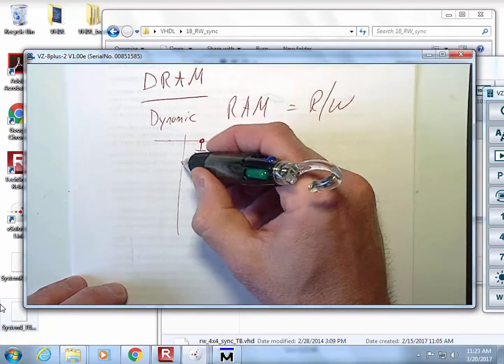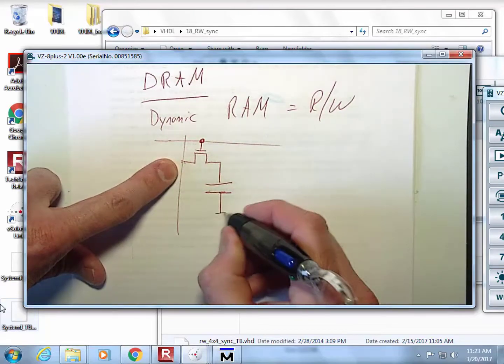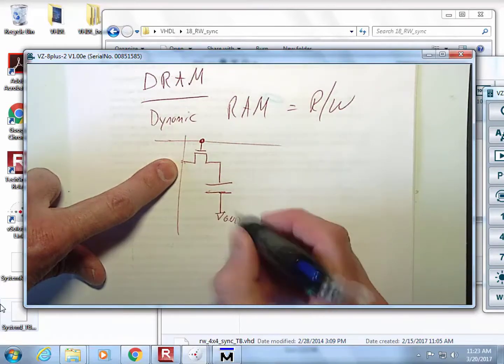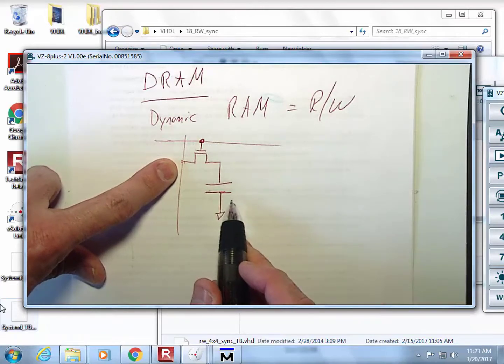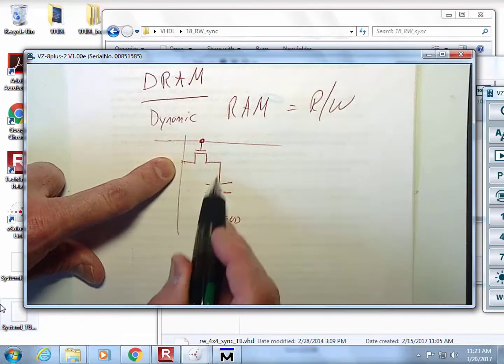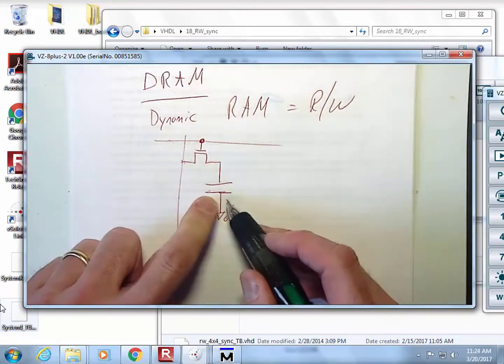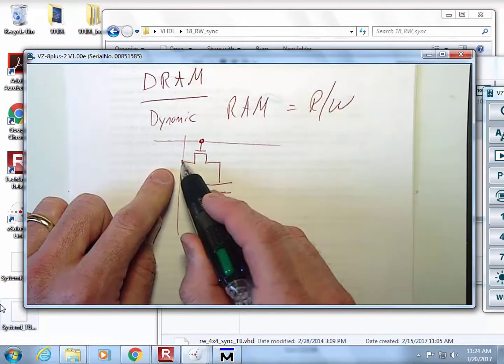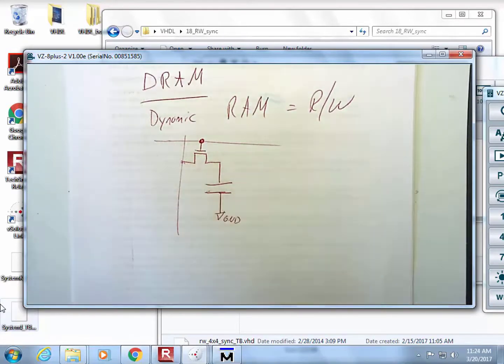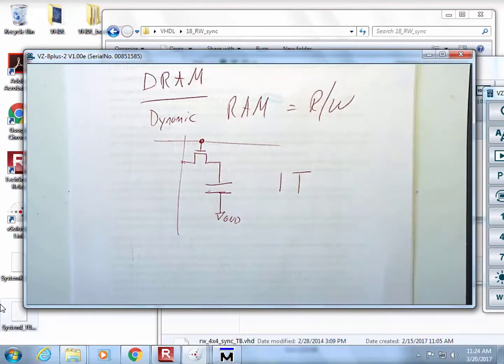You can access it here with a line, and you can access it here with a line. So right here is where you read the contents of what's on there, and we'll put this at ground just as an example. If you charge this up to a 1, so it's at its power supply, what would happen is if you looked at it through this transistor, you would see a 1. Or you could discharge it to a 0, and you'd look at it with this line right there and you'd see a 0. How many transistors does this take? One transistor? Correct.